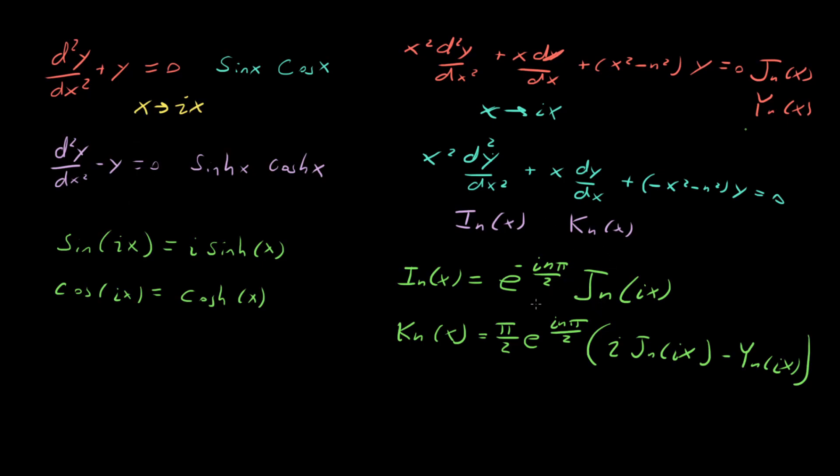So we have J_n here, and that goes directly over to our modified Bessel function of the first kind. But this modified Bessel function of the second kind is a little weird. We're looking at this strange linear combination of solutions instead of just Y_n(ix).